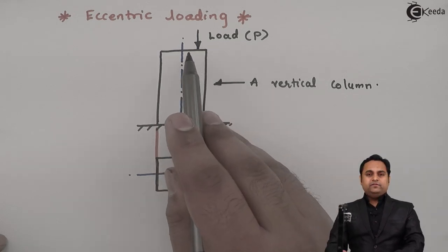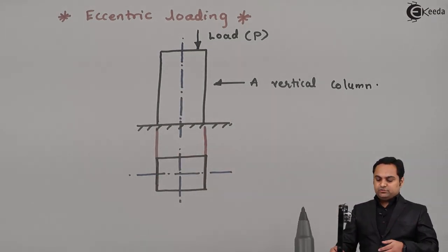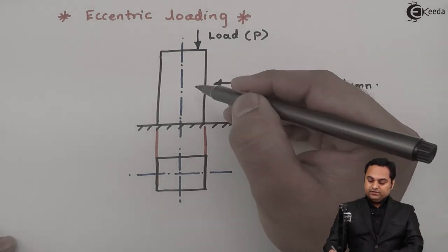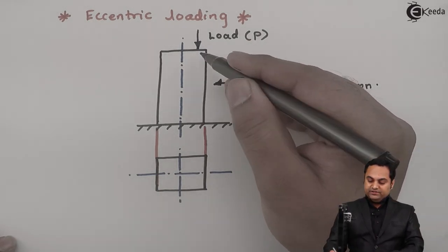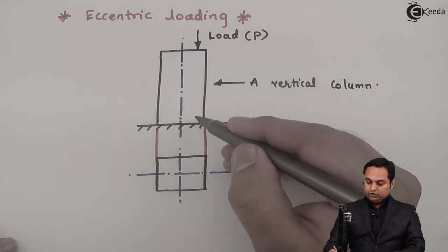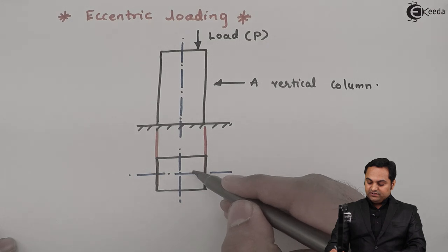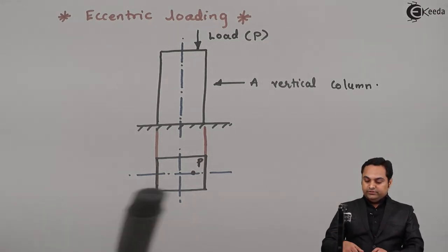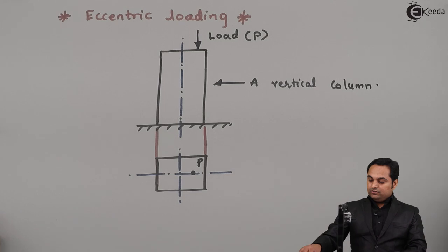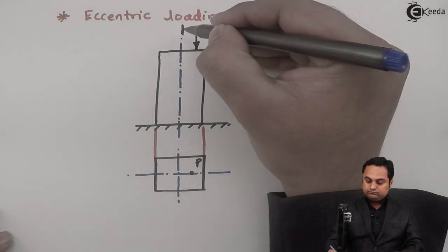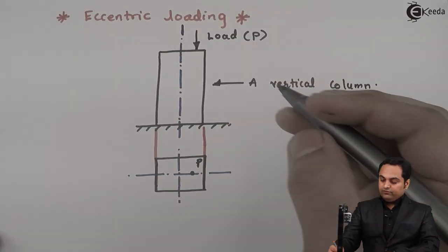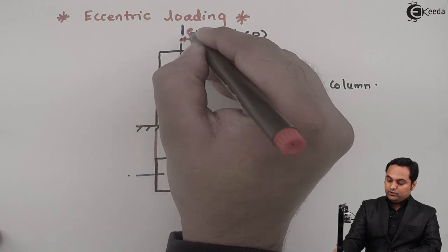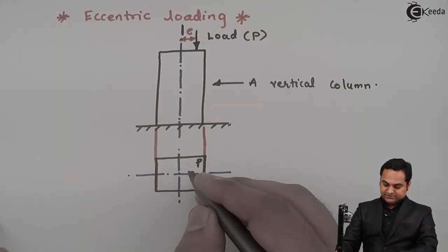Whenever the load is away from the axis, it is called as eccentric load. If we consider this as the front view, at the top the load will appear as a point. The distance of this load from the axis is denoted as small e.